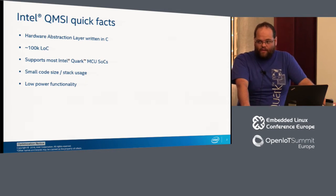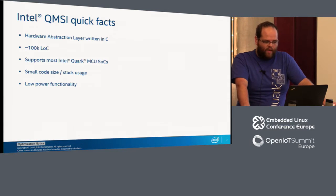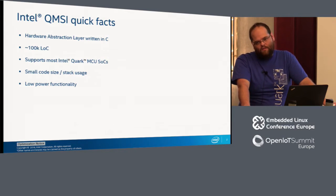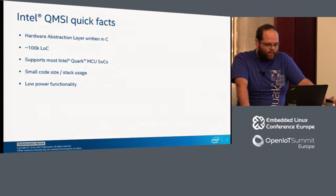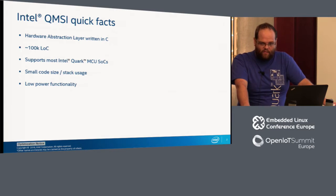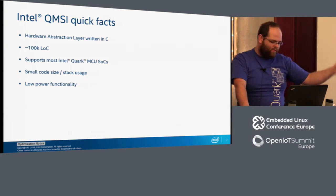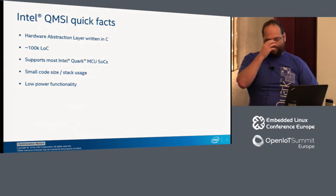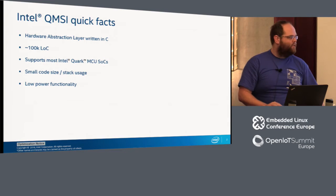Because these are microcontrollers with very limited space and memory, one of the main objectives for this abstraction layer is to provide as much functionality as possible in the smallest possible code space. And because microcontrollers need low power functionality, we've also included low power features tailored to each different microcontroller as part of QMSI.